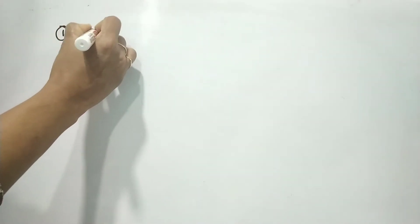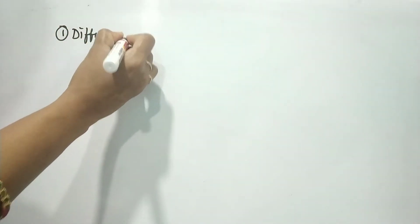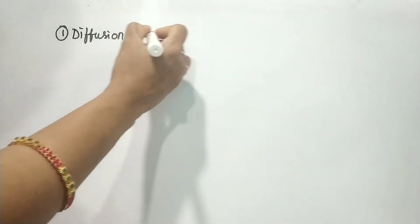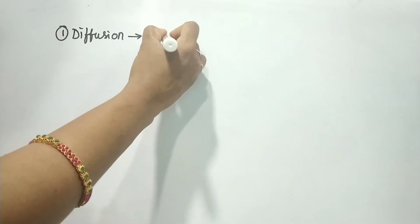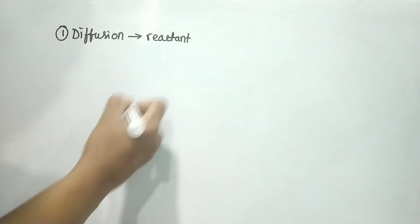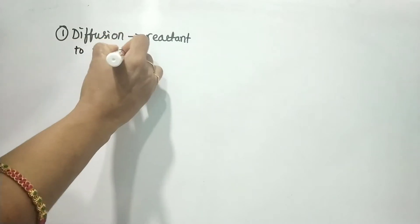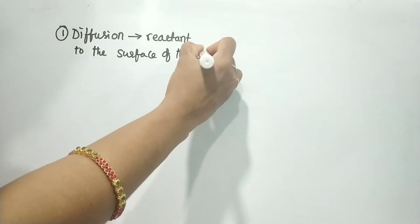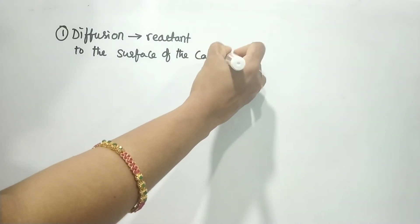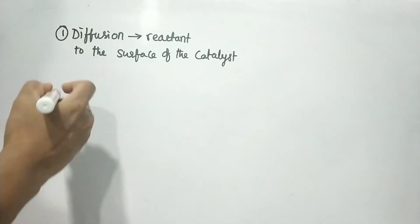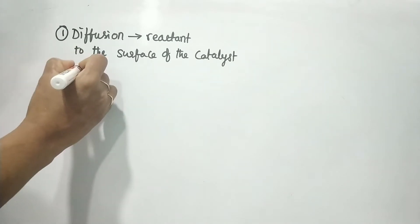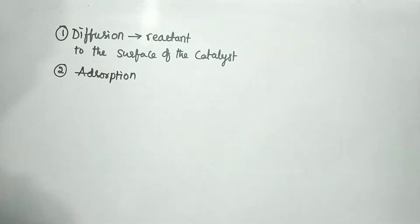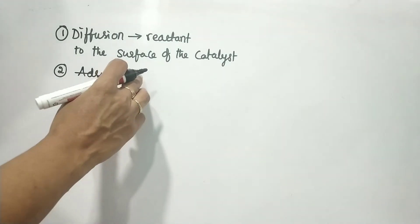The first step is diffusion — diffusion of the reactants to the surface of the catalyst. The reactants first diffuse to the catalyst surface. The second step is adsorption — adsorption of the molecules on the surface of the catalyst.